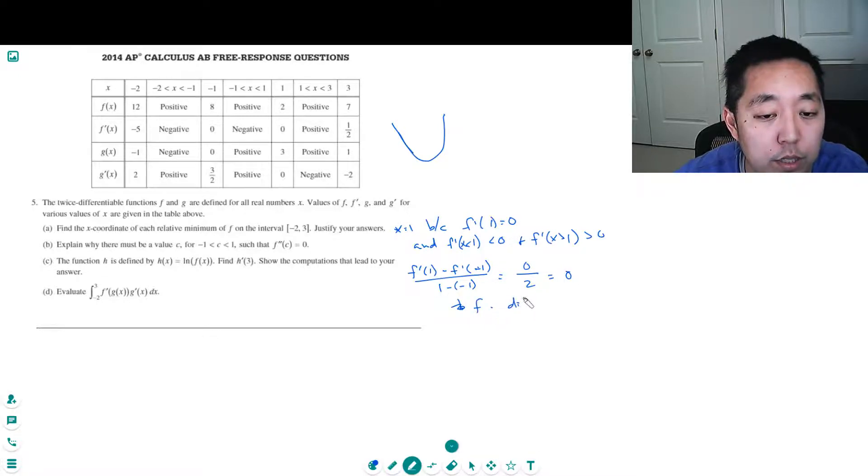And f is differentiable and continuous. f prime is differentiable because f is twice differentiable and therefore continuous. Then by the mean value theorem, there exists a c between 1 and negative 1 such that the derivative of f prime, which would be the second derivative of c, equals 0.